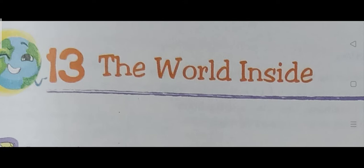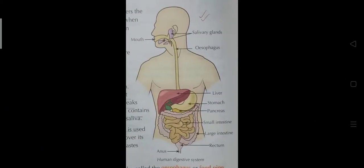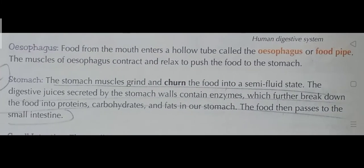In the last class, I already taught you about the mouth. So let's start today's class. As you can see in the picture, this diagram of the human digestive system shows the mouth, salivary gland, esophagus, liver, stomach, pancreas, small intestine, large intestine, rectum, and anus. In today's class, we will learn about the esophagus.